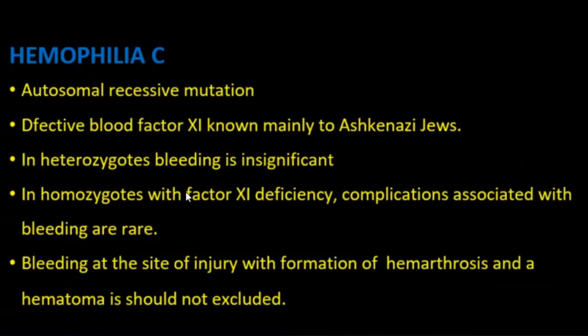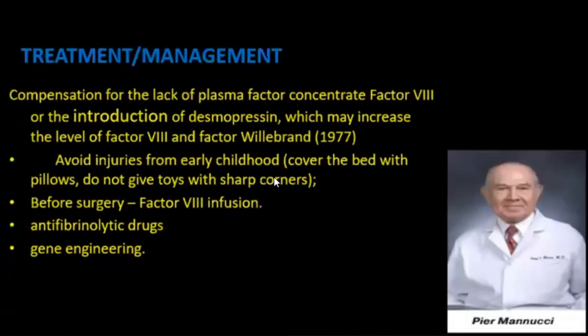Hemophilia C is an autosomal recessive mutation with defect of blood factor XI, most common in Ashkenazi populations. In heterozygotes, bleeding is insignificant. Treatment involves compensation of the lack of plasma factors — concentrate of factor VIII or introduction of desmopressin, which may increase the level of factor VIII or von Willebrand factor.